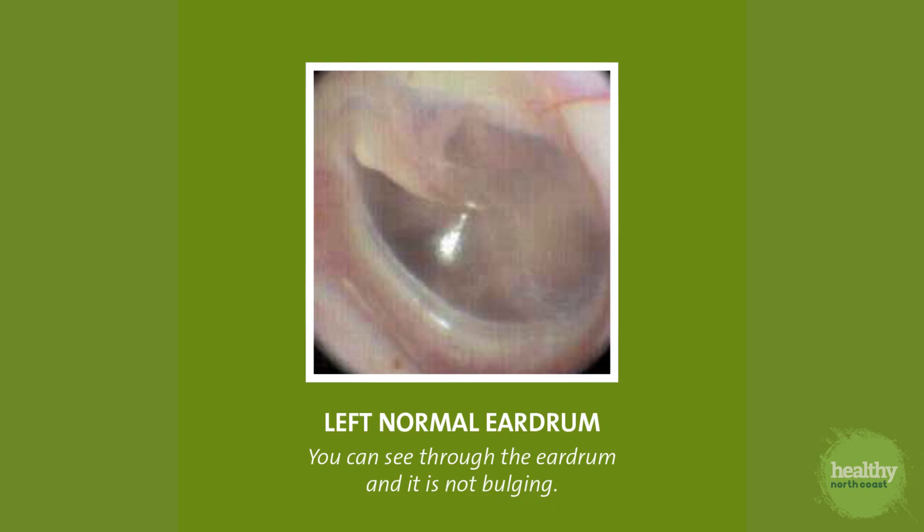Let's take a look at the anatomy of the normal eardrum using some photos we took with our video otoscope. As you can see, the most prominent feature of the eardrum is called the handle of the malleolus, which is the bone that conducts sound from the eardrum to the brain.